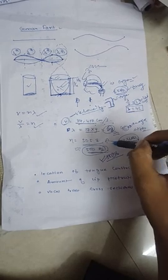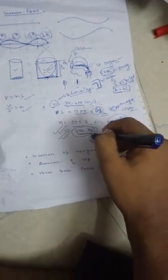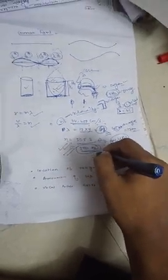This is the total concept of speech production and the average first formant frequency of humans. The modern acoustic theory of speech production was given by Gunnar Fant. Three key things to remember: first, the location of tongue constriction — where the tongue touches the palate or any position in the oral space.